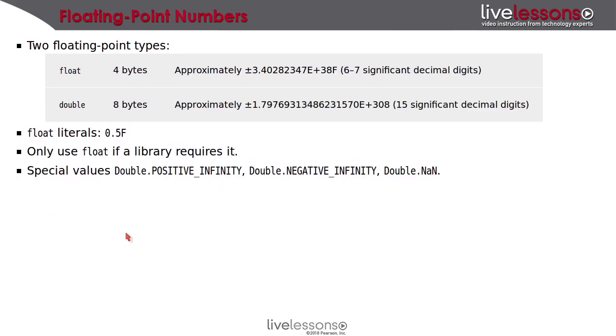There are two floating-point types in Java called float and double. You will almost always use double. The only reason to use float is because you're working with some library that requires it. There are special values that indicate plus or minus infinity and not a number value that you get when you make a floating-point computation that doesn't have a valid result. And these are written as double dot followed by the names of those special values.